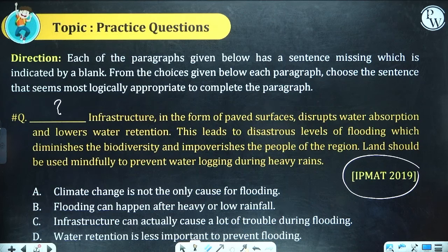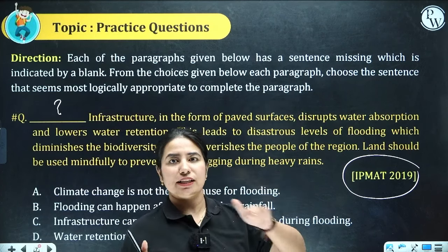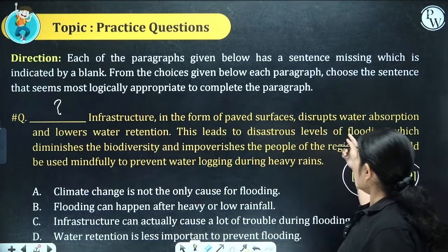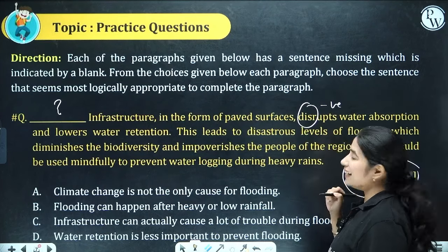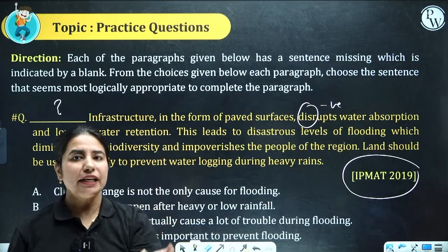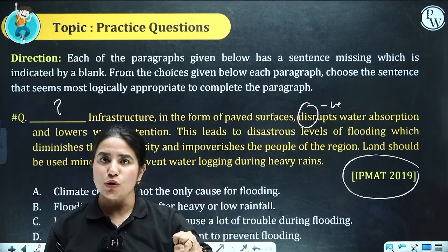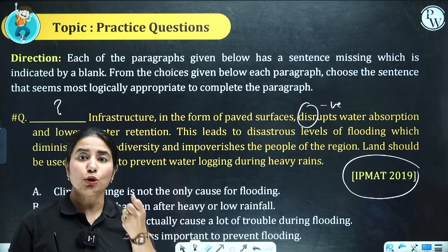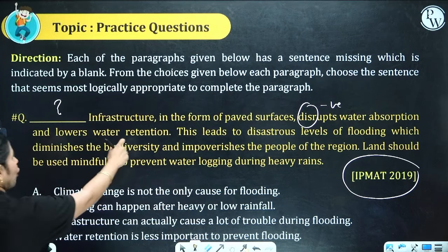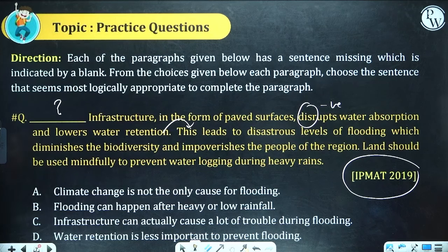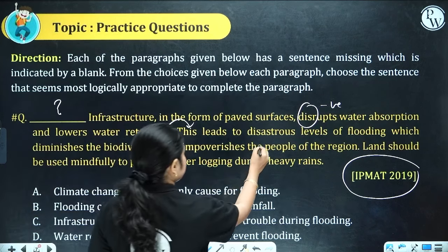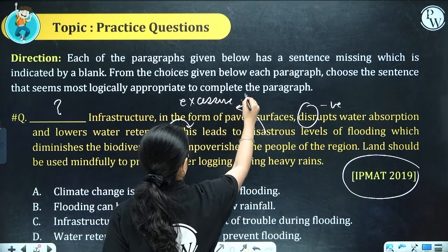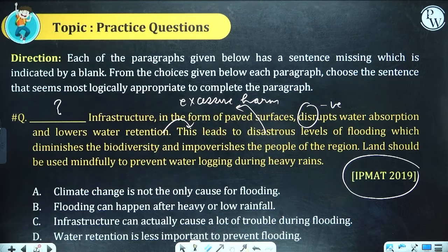The paragraph says: infrastructure in the form of paved surfaces disrupts water absorption and lowers water retention. Paved or cemented surfaces — like footpaths — disrupt water absorption because if the surface is soil, water soaks in, but on a constructed pavement, water does not soak. So it is disrupting it and lowering water retention — the ability of the surface to hold water. This leads to disastrous levels of flooding. Disastrous means harmful — excessive harm.